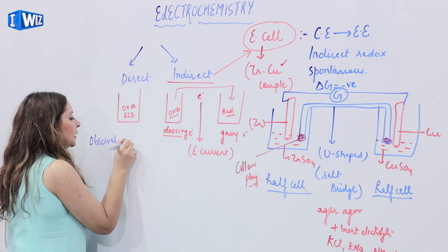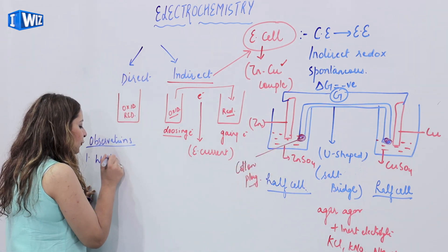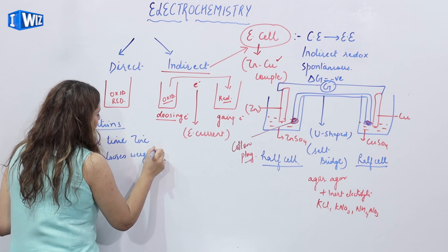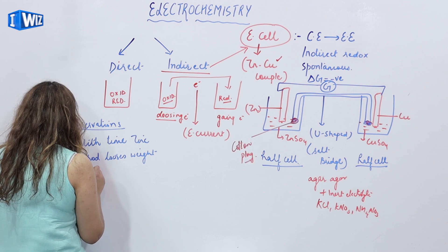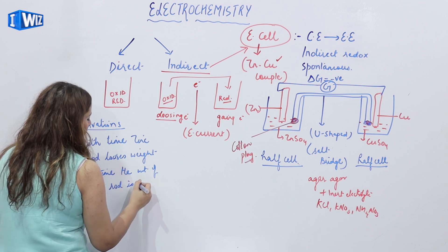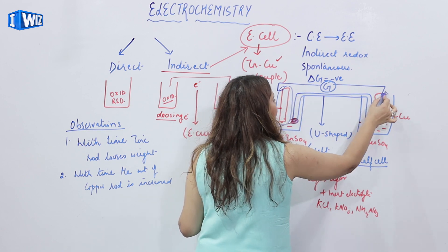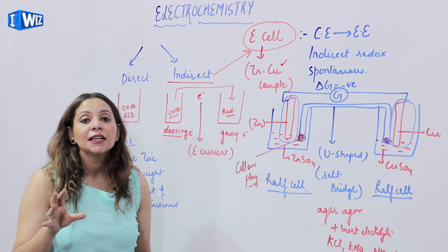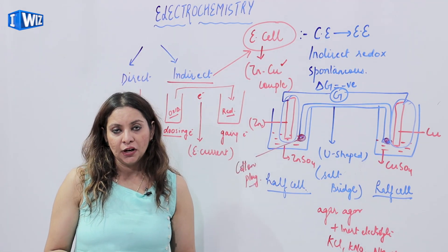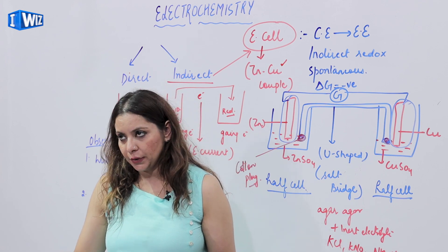When we connect the cell, we observe that with time the zinc rod loses weight and the copper rod gains weight. The reason is that indirect redox reaction is taking place. Zinc is more reactive than copper — it has a greater tendency to lose electrons. So zinc loses electrons to form Zn²⁺ ions.